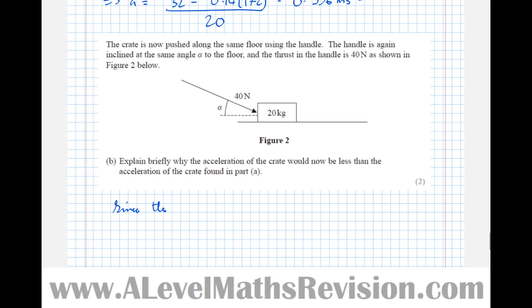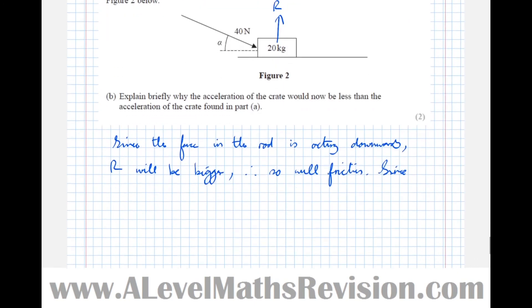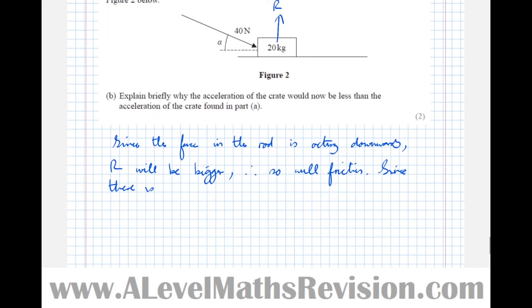Well since the force in the rod is now acting downwards, acting downwards, R the normal reaction will be bigger. Therefore, so will friction. Since there is more resistive force, this implies smaller acceleration.